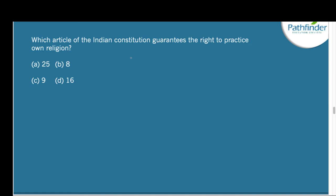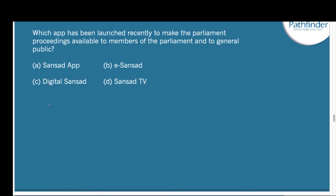Next question: Which article of the Indian Constitution guarantees the right to practice one's own religion? The correct answer is Article 25. Next question: Which app was recently launched to make parliament proceedings available to members of parliament and the general public? The options are Sunset App, eSansad, Digital Sansad, and Sansad TV. The correct answer is the Digital Sansad App, launched in January 2022. It makes it easier to follow proceedings in parliament and allows access to archival data related to all Lok Sabha sessions. The idea was given by Lok Sabha Speaker Om Birla.